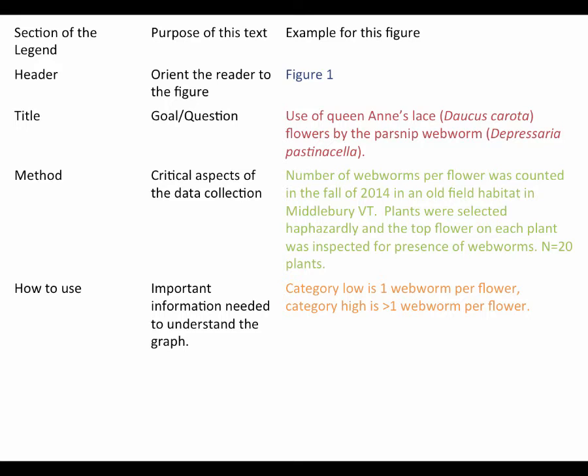The next portion of the text is going to give you the methods or the critical aspects of data collection. This should not be a full-bore methods section — it should present only the really critical, important pieces of the methods needed to understand the figure. All of the details about the methods would be covered in a materials and methods section.